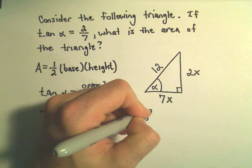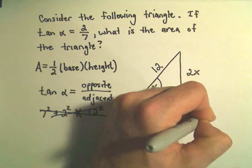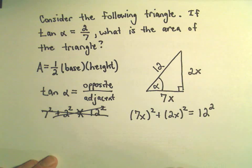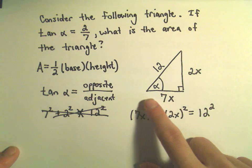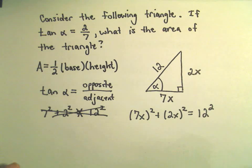So, 7x squared plus 2x squared equals 12 squared. Now, we'll have an equation involving x. We can figure out the value for x. That will give us the width, the height, and then we can just use our formula.